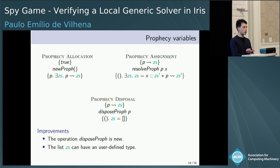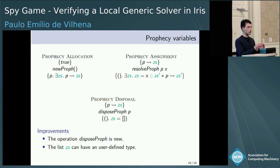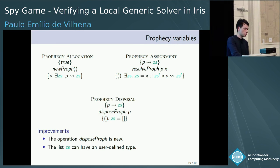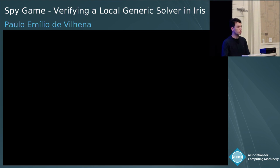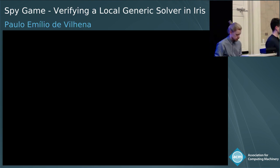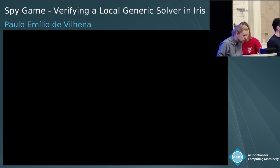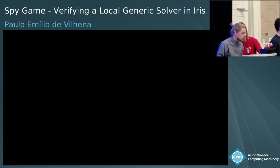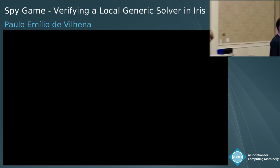The problem is that for the existence of fixed points, we managed to find a nice framework without too many assumptions on the function. But for termination, there are many possible hypotheses we could assume, and it is difficult to choose one. We did not manage to find a more abstract set of assumptions to guarantee termination. Thank you very much.